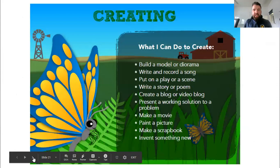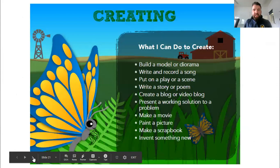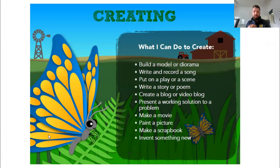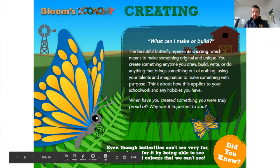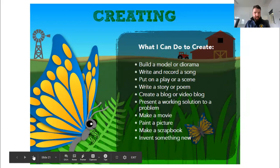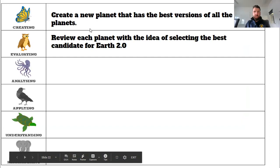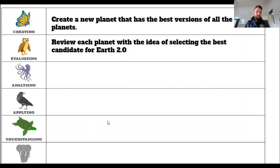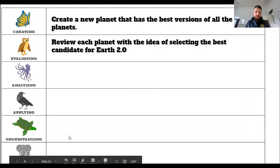The final stage is Creating, signified by a butterfly - butterflies start as a caterpillar and transform into something completely new that did not exist before. What could I make or build? We really need to think about the originality and uniqueness - making sure the new creation is genuinely new and original. For the space topic, the worked example is to create a new planet that has the best versions of all the planets. That's a cool creative task, and you can see how all the other levels feed into being able to do it.